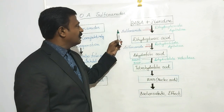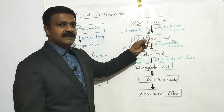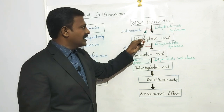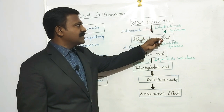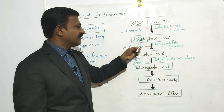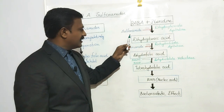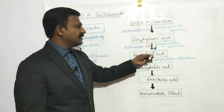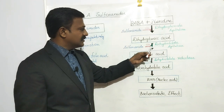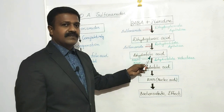Then how do the sulfonamides act? The sulfonamides competitively inhibit the enzyme dihydropteroate synthetase. Once it inhibits dihydropteroate synthetase, it does not allow the formation of dihydropteroic acid. And also the sulfonamide drugs inhibit the enzyme dihydrofolate synthetase, thereby inhibiting the formation of dihydrofolic acid.